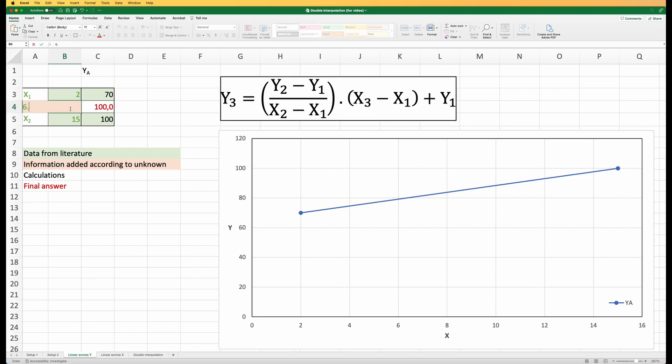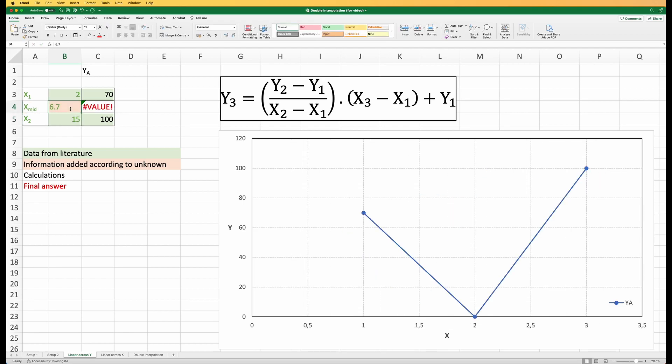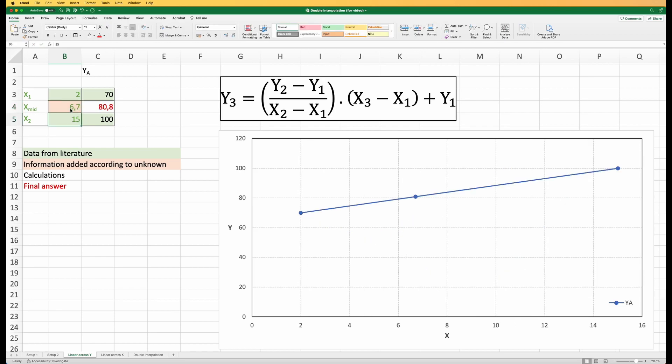Let's just randomly put a number in the middle - 6.7 somewhere in the middle. It's quick and easy, I can do linear interpolation across the y using the formula. I don't need the graph but I can just use it here just to represent where we are on the line here of our linear approximation.